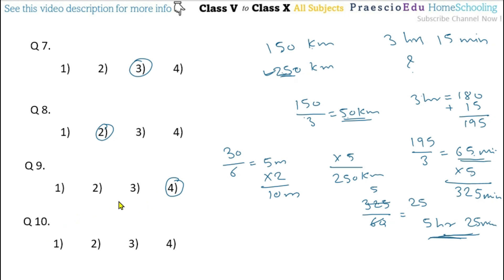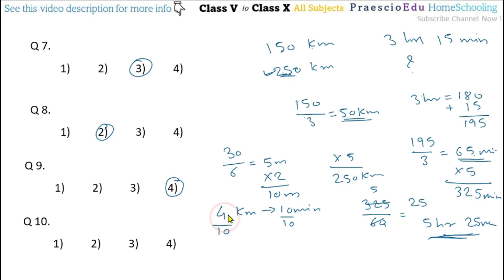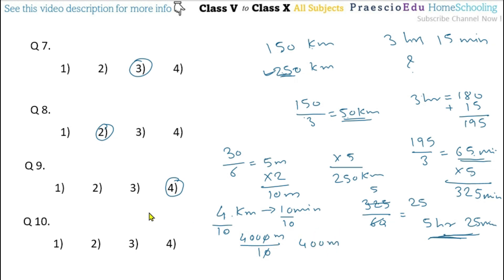Question number 10: Siley covered a distance of 4 kilometer in 10 minutes. How much distance will he cover in 1 minute at the same speed? First convert 4 kilometer to 4000 meter, then divide by 10. One zero cancels, giving 400 meter per minute. This is given in option number 3. Thank you.